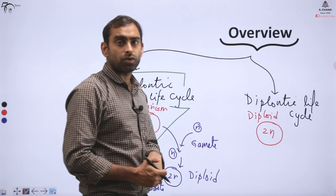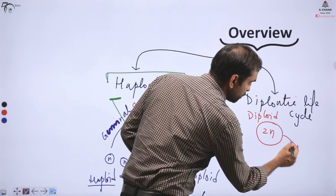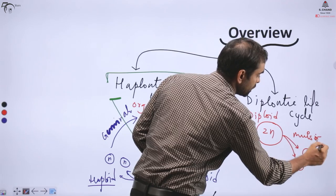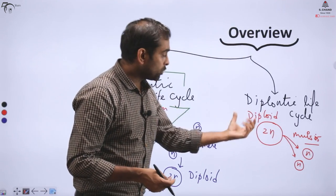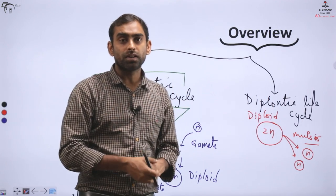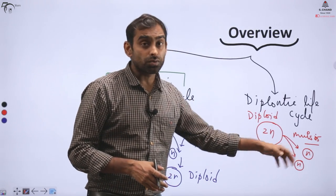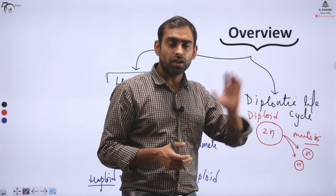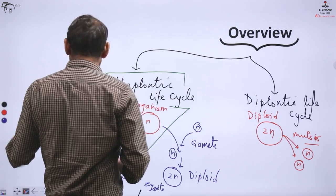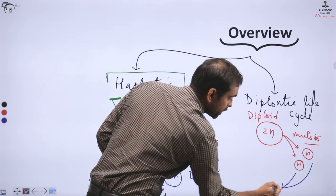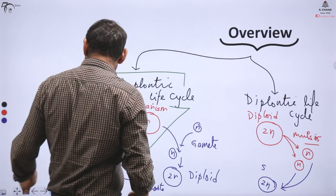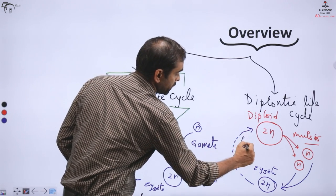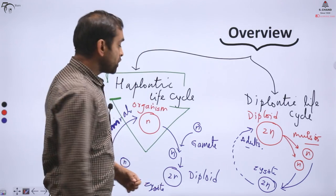In higher organisms like humans, there is diplontic life cycle. What does diplontic life cycle mean? The living organisms, the life forms that we see - elephants, horses, animals, dogs - their visible life forms are basically diploid. They have paired chromosomes. So life forms are diploid. When gametes are formed, meiosis is involved, reductional division is involved. And this must happen, because when gametes form from 2N chromosomes, if reductional division doesn't occur, chromosome number would become 4N.